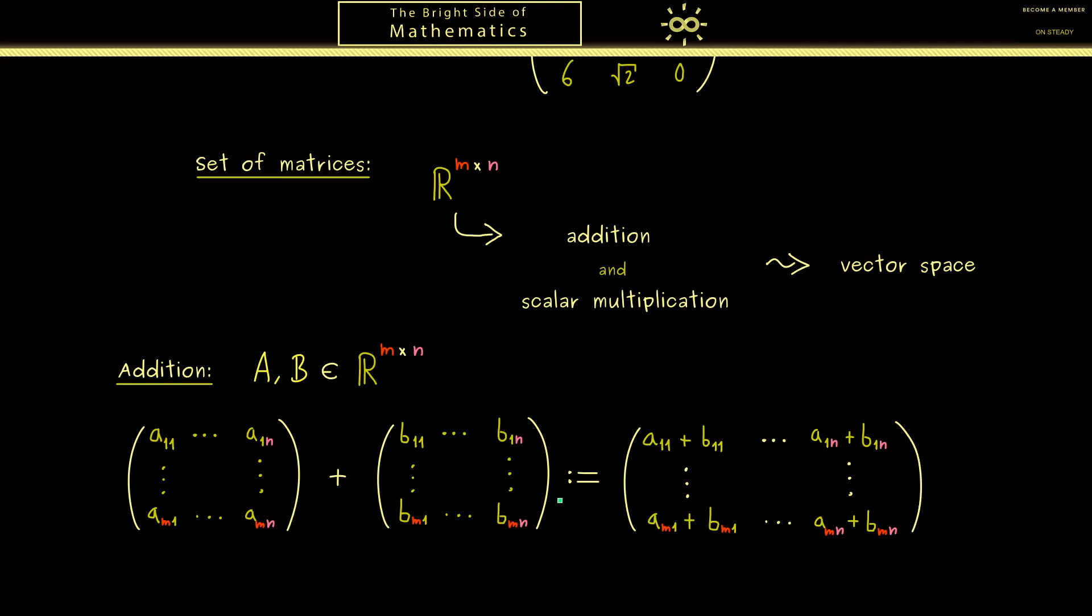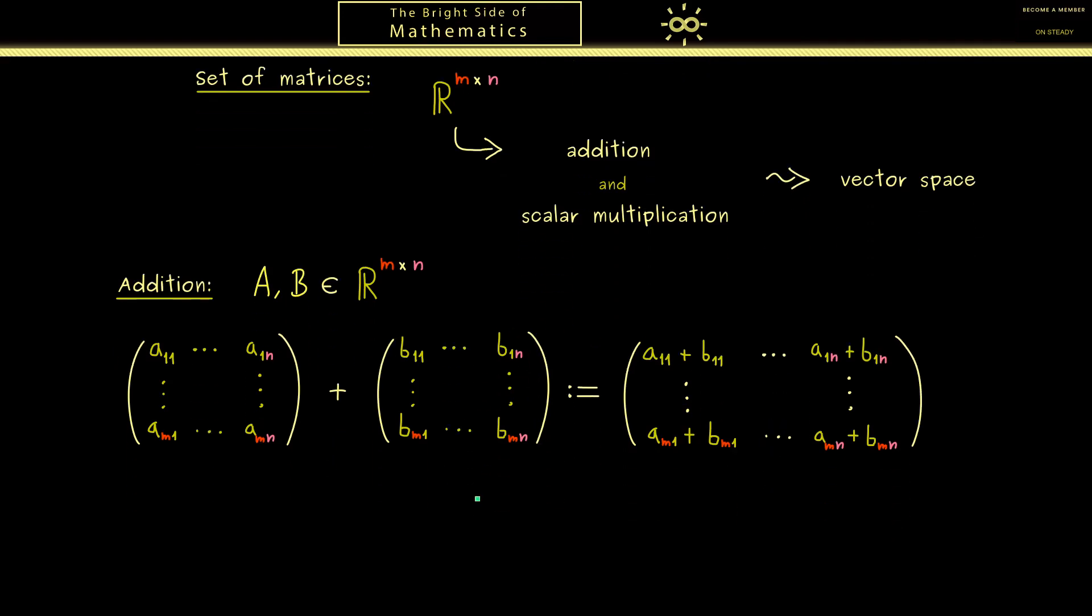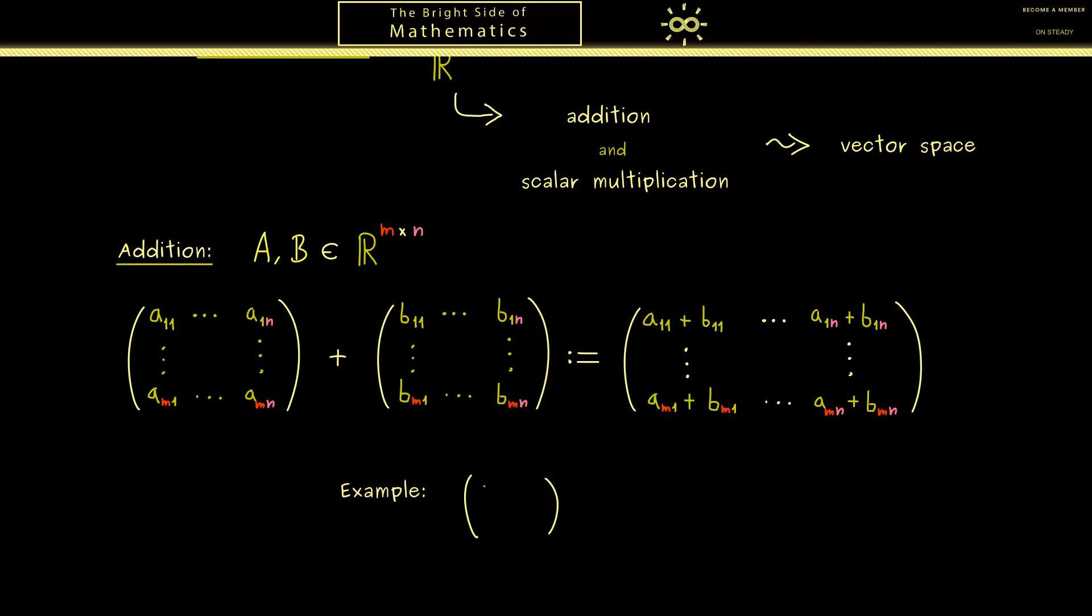Okay, then I would say let's also look at a quick example. So maybe we just use a 2 times 2 matrix with the numbers 1, 2, 3, 4. And then we add the matrix 1, 0, 2, minus 1. Okay, and then you should see this is 2, this is 2, this is 3 plus 2, so 5, and the other one is 3. So you see this was not hard at all, and the end result is again a 2 times 2 matrix.